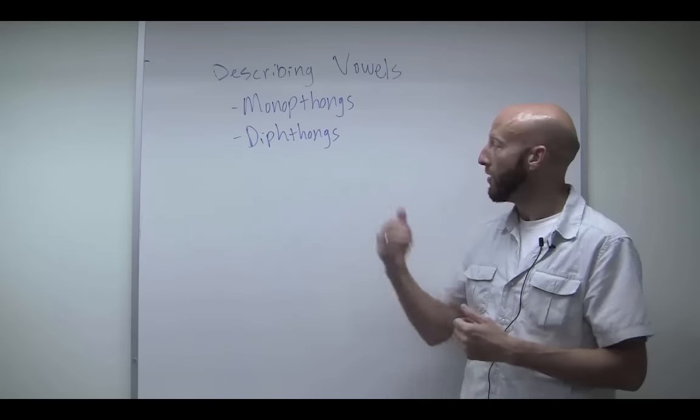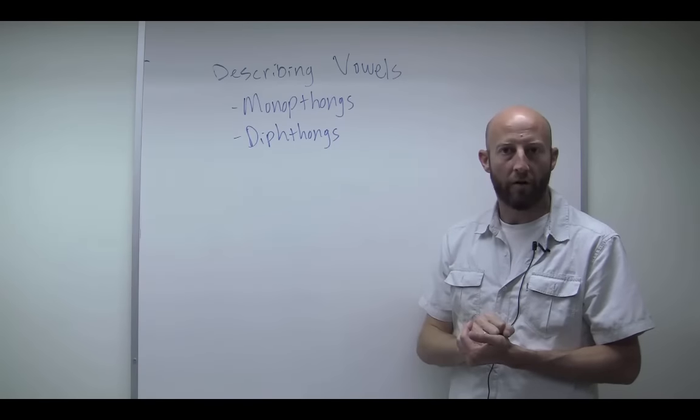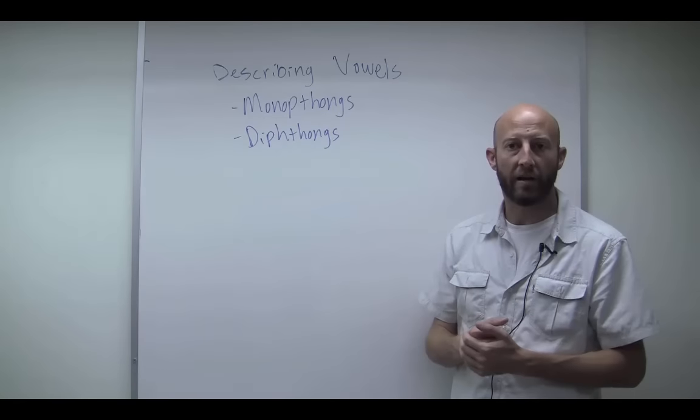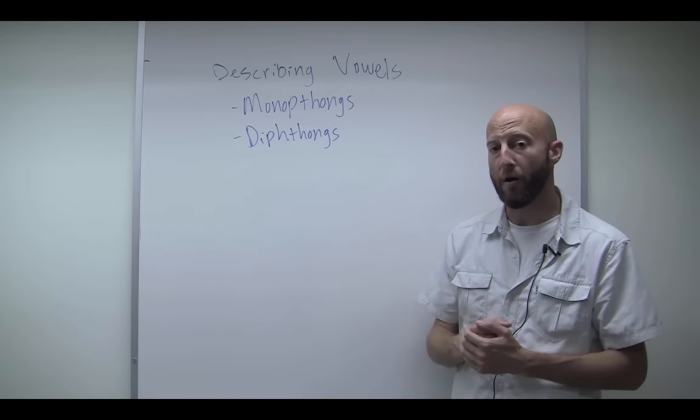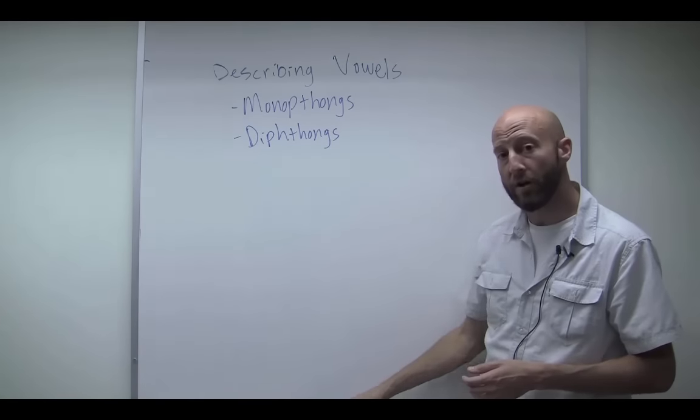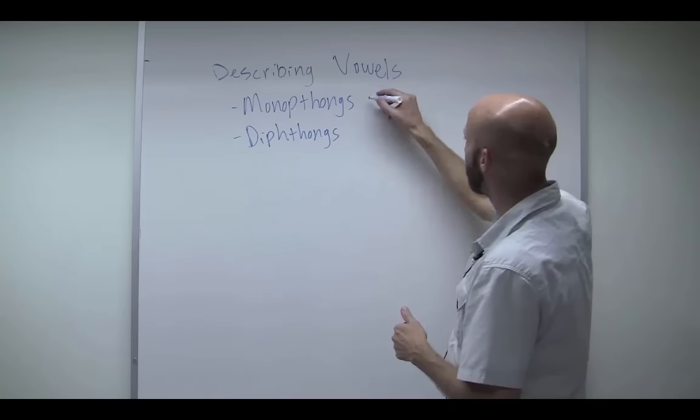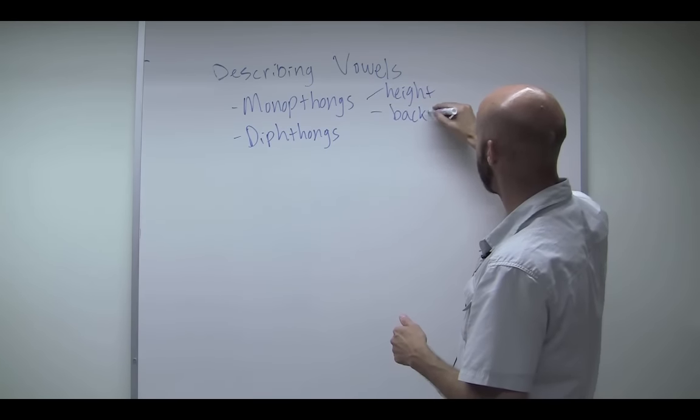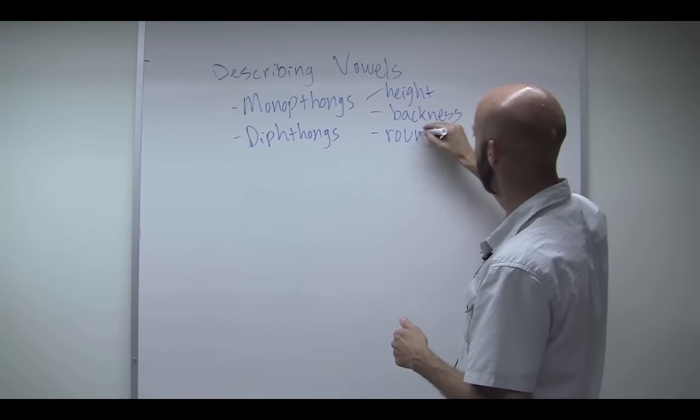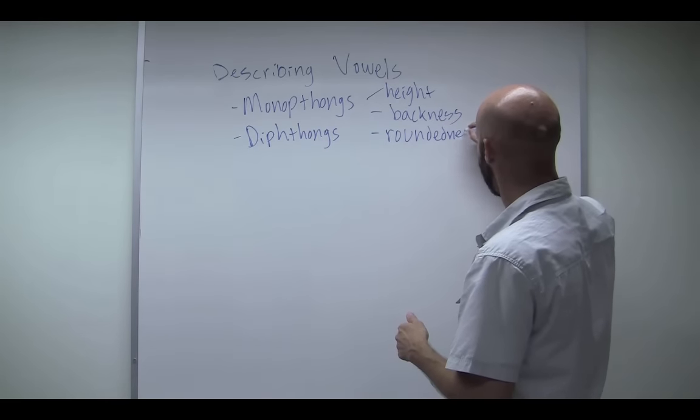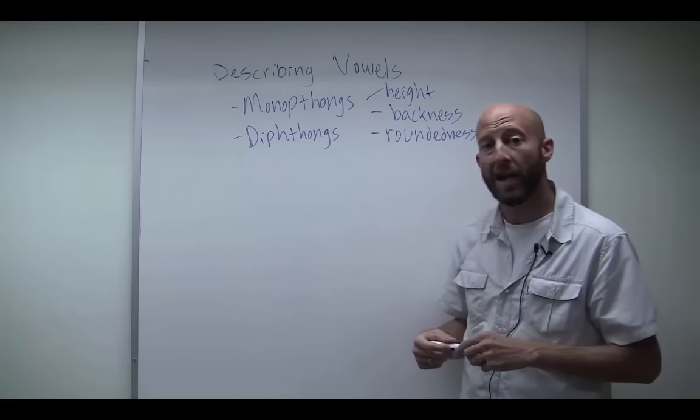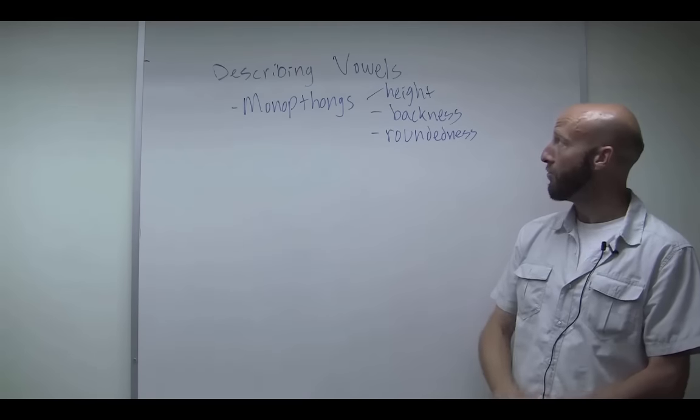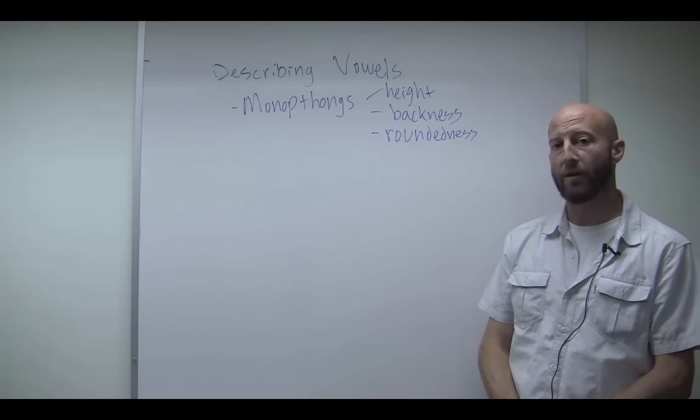So how do we describe vowels? We're only going to talk about monophthongs, how to describe monophthong vowels. Because when you describe diphthong vowels, it's a little bit more complicated and it's more than we can cover in this video. But for monophthong vowels, there's three criteria that we use. So we have height, backness, and roundedness. There's another category that linguists often use called tenseness, but we won't be covering that in this video. So the three criteria we're using to describe vowels: height, backness, and roundedness.